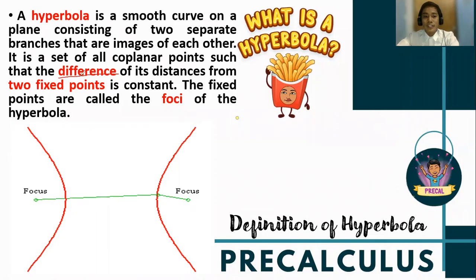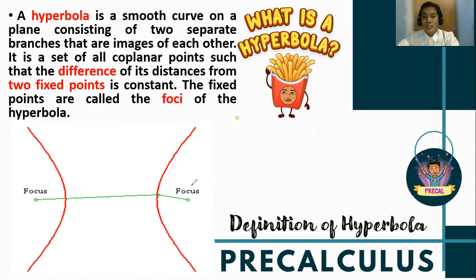Notice that the only word that is different from the definition of an ellipse is the word 'difference.' For the definition of the ellipse, we use the word 'sum.' For the definition of the hyperbola, it is associated with the difference of the distances from the two fixed points. Notice the focus and another focus on the two branches — these are the foci, which are the fixed points of the hyperbola.